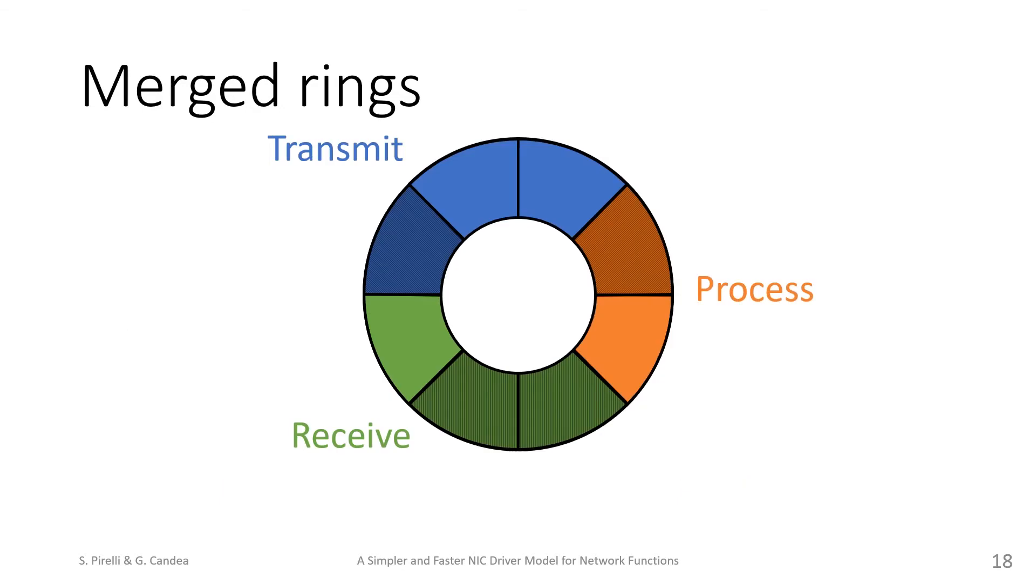This allows us to merge the rings into a single logical ring, which contains one reception ring and one or more transmission rings. Buffers switch from state to state in the logical ring, which corresponds to switching from the hardware-owned to the software-owned part of the physical rings. All buffers stay at the same location in every ring, it's only their logical state that changes.